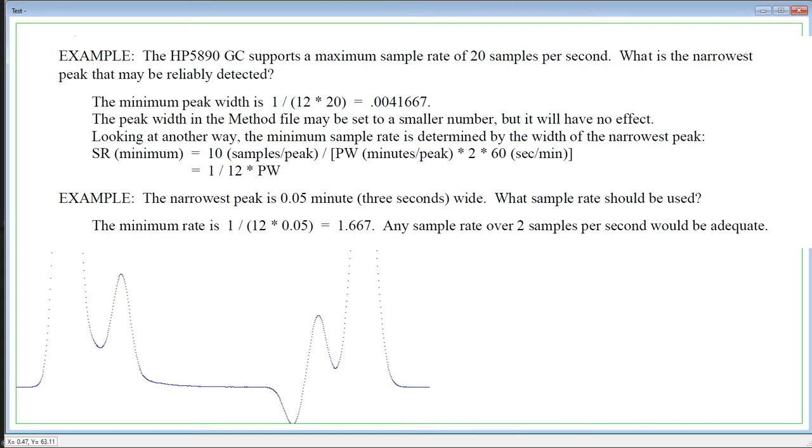Example: the narrowest peak is 0.05 minutes or 3 seconds wide. What sample rate should be used? The minimum rate is 1 divided by 12 multiplied by 0.05 equals 1.667. Any sample rate over 2 samples per second would be adequate.